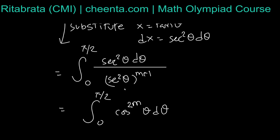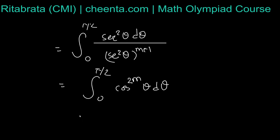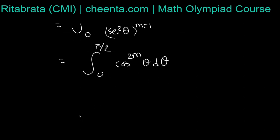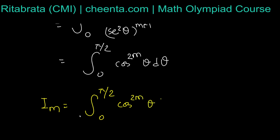That simplifies to the integral from 0 to π/2 of cos^(2m) θ dθ. So this is my expression for I_M, and it looks much simpler. I_M equals the integral from 0 to π/2 of cos^(2m) θ dθ.